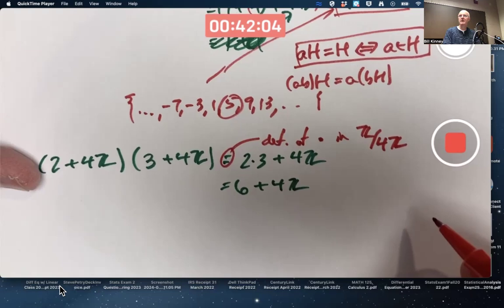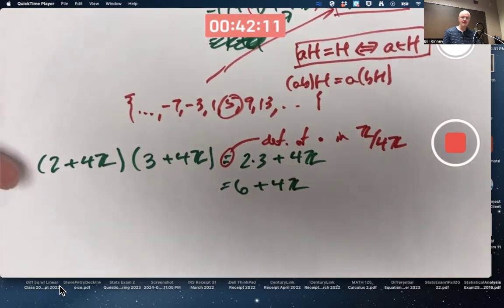It's associative and the distributive property holds, but it's not necessarily a group operation. Could be, but not necessarily. If we exclude 0, at least it could be.